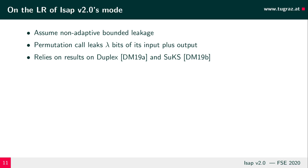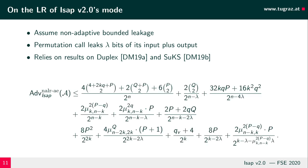For ISAP v2.0, we also provide a security proof in the leakage-resilient setting. For this proof, we assume non-adaptive bounded leakage: each call to the permutation leaks lambda bits of its input plus output, and for repeated calls with the same input, the same information leaks. The proof is a combination of results on the leakage resilience of the duplex construction and the suffix keyed sponge, since the components of ISAP v2.0 can be considered as either a duplex or a suffix keyed sponge. The bound is quite complex, so for full details we refer to the paper.